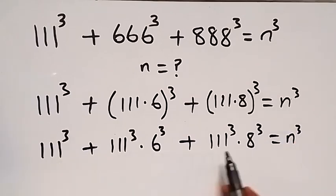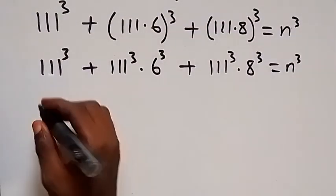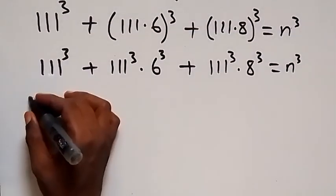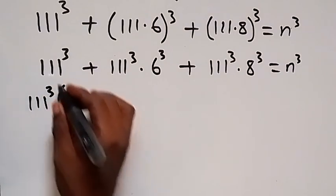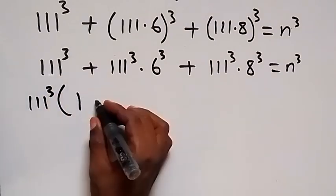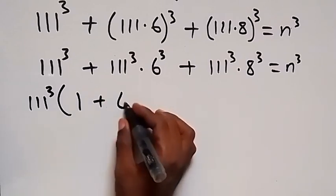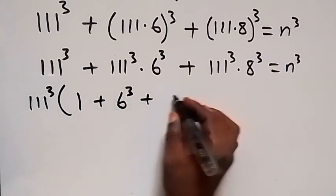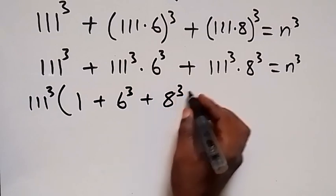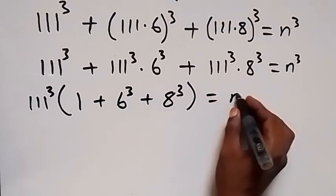From here we can see we have 111 raised to power 3 — that is 111 — keep common, so let's take it out. Then we have 111 raised to power 3 out, and here we are left with 1, plus 6 raised to power 3, plus 8 raised to power 3, equals n raised to power 3.